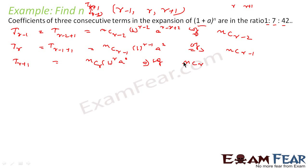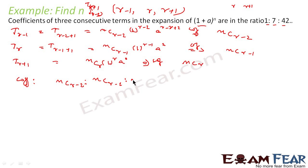So we have the coefficients as nC(r-2) : nC(r-1) : nC(r), and this ratio is equal to 1 : 7 : 42. This is the equation we have got.